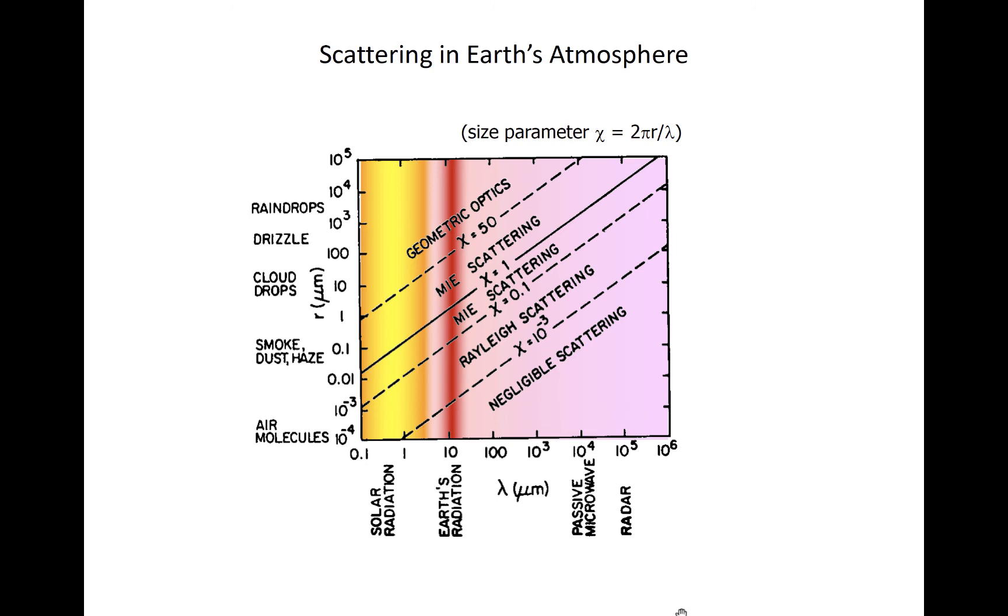On the abscissa of this plot is wavelength of radiation, and on the ordinate is the radius of different potential scatterers in the atmosphere. We define a size parameter, which is 2πr divided by λ, or ratio of the circumference of a hypothetical spherical scatterer to the wavelength of radiation.